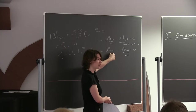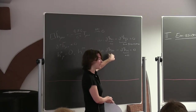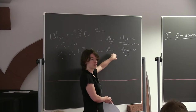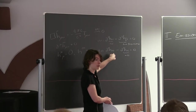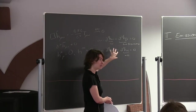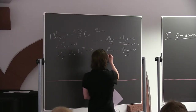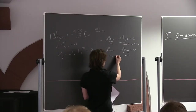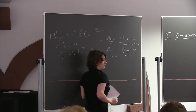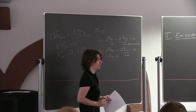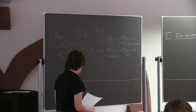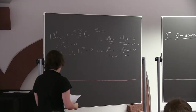You see that the time derivative of the h_{00} component is zero, which means it's just a static thing. But this is nothing else than Newton's potential. So for all intents and purposes of the gravitational wave, you can actually set h_{00} to zero. That's the thing we were missing in yesterday's lecture.